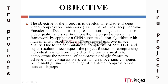The project's objective is to create an end-to-end deep video compression framework, DVC, that uses a deep learning encoder and decoder to reduce motion images while also improving video quality and size. The framework is extended by employing the CNN super-resolution technique with high-intensity pixel replacement. Because both DVC and super-resolution approaches are computationally demanding, the project focuses on compressing individual frames, demonstrating the capability of single-frame compression on a high-processing machine while emphasizing the difficulty of real-time compression on typical laptops.